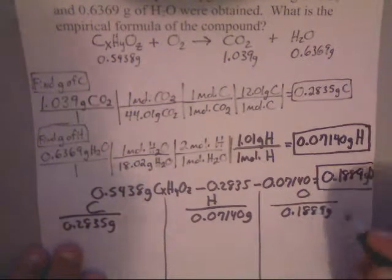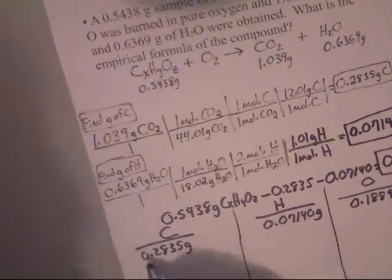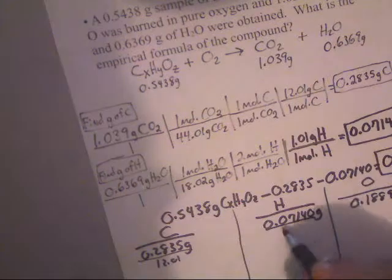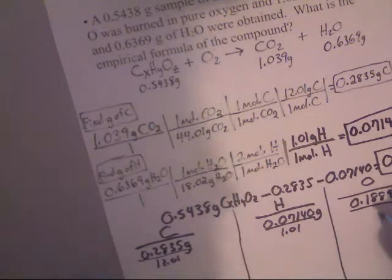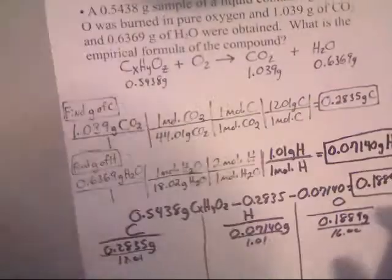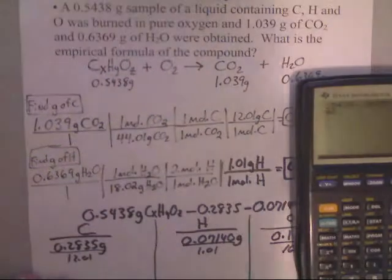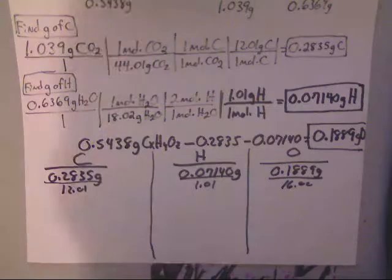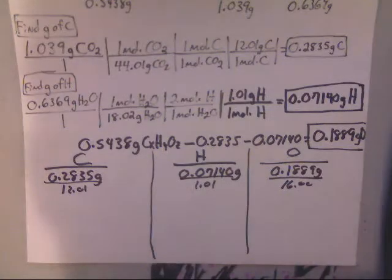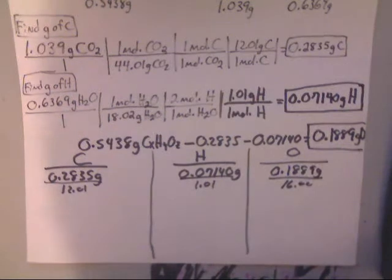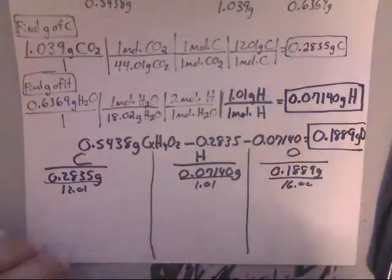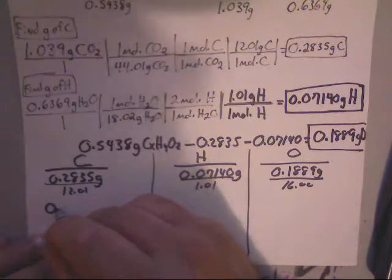So I'm going to divide this one by 1.01 because I need moles. I'm going to divide that by 16.00. So we do the math real quick. And that gives me, oh, I'm almost out of space. That gives me 0.2835 divided by 12.01. And I'm going to keep four numbers still. That would give me 0.02361. And that would be moles of carbon.